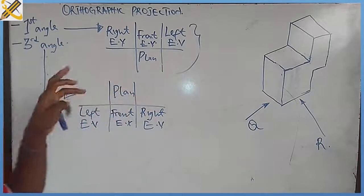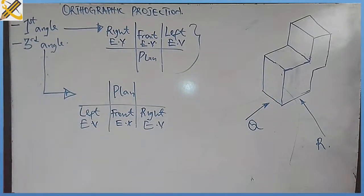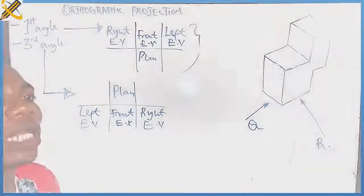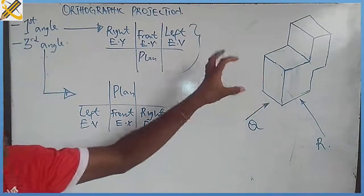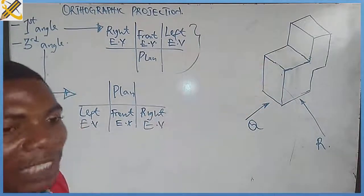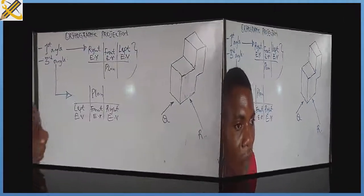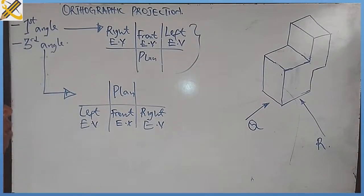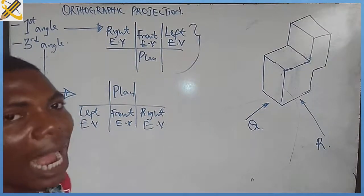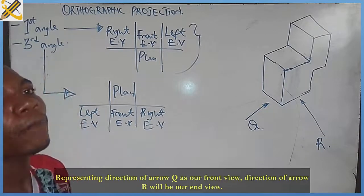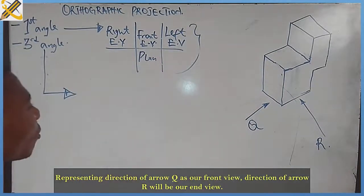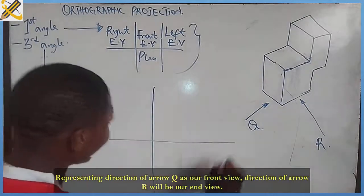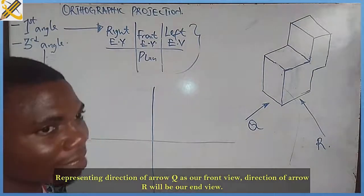Bearing this chart, I'm going to ask you to put it down in your booklet. Let's use this chart to solve this particular question. If we are given this kind of question and we are to draw it in first angle orthographic projection, this object is in isometric view. The first thing you need to take note of is to create your chart first. If the question says take the direction of arrow Q as your front elevation, then you will automatically know what this arrow will be — your end view. So you need to create your chart.